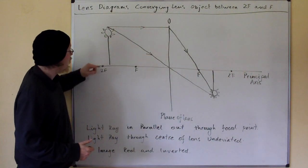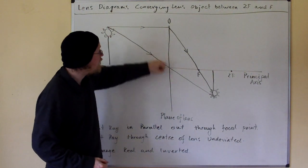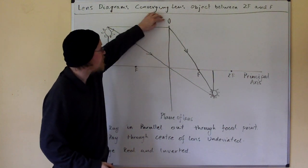Now, here is our object. Here is our plane of the lens, which is a converging lens.